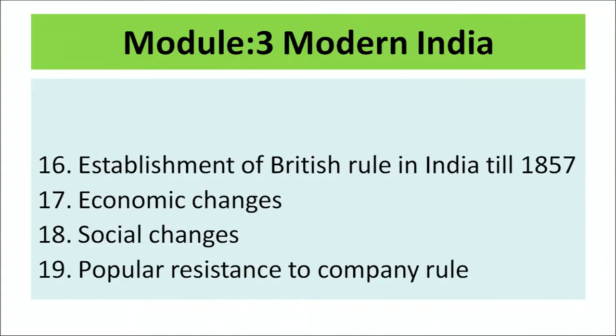Now let us understand Module 3, that is Modern India. This module is designed to promote a critical approach towards the British policies which transformed a trading company into a sovereign power, and to study the impact of modern Western ideas on Indian society which contributed to social awakening and religious reform movements. You will find 4 lessons: Lesson 16 – Establishment of British Rule in India till 1857, Lesson 17 – Economic Changes, Lesson 18 – Social Changes, and Lesson 19 – Popular Resistance through the Company Rule.